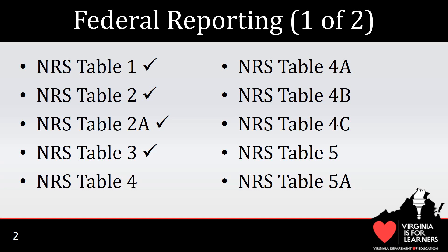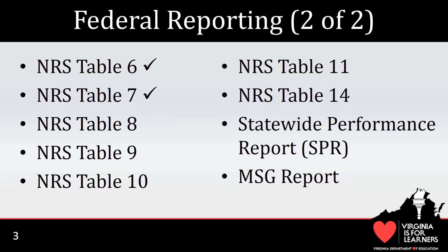There are a total of 17 NRS Tables. On this slide, the first 10 are listed. The tables we will focus on today are indicated with a checkmark. Here are the remaining 7 NRS Tables. Also listed are two new reports, the Statewide Performance Report, or SPR, and the Measurable Skill Gain, or MSG, report.